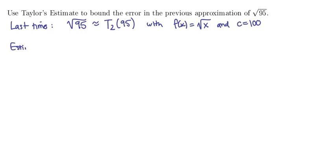Now let's use the estimate. The estimate says that the error will stay within a specific range of values. Specifically it stays within plus or minus m3, because it was a second order estimate, over 3 factorial times a minus c to the third power.